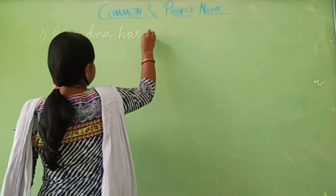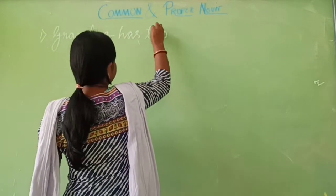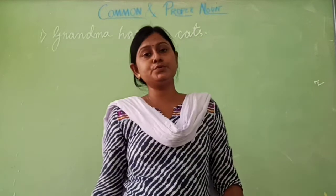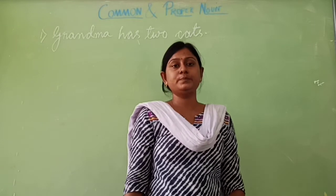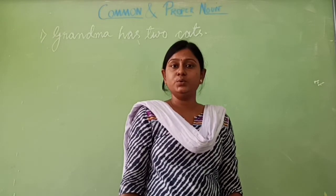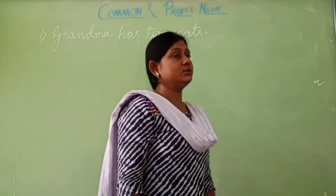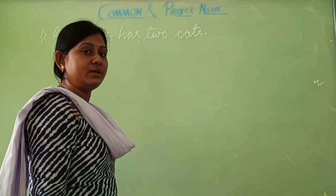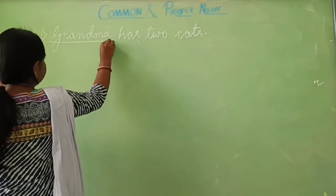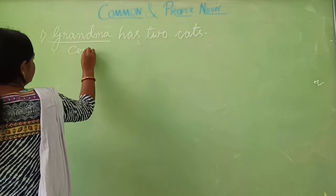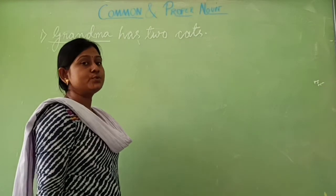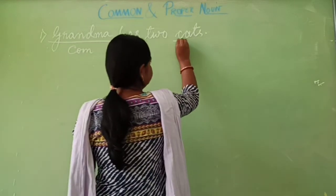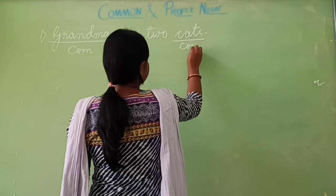The first sentence is: Grant Mark has two caps. You have to underline the common noun and circle the proper noun. Grant Mark is the common name of a person, so underline it and write COM. Caps is also a naming word — the name of an object — so it is also a common noun.